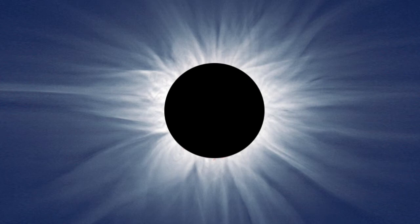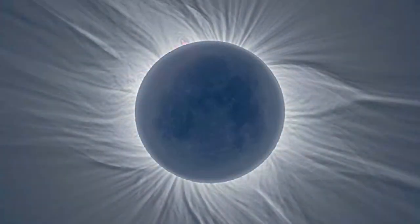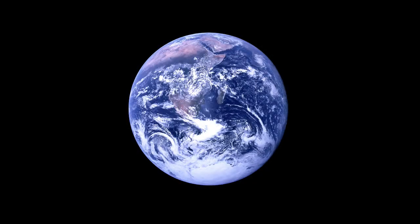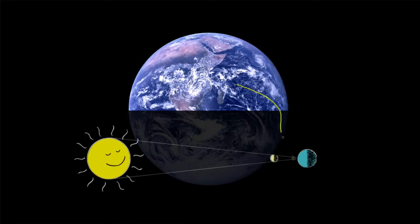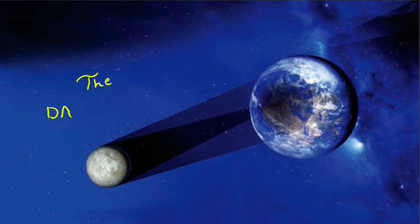For my first total solar eclipse, I saw the face of the moon where the sun should be. But it was a new moon — how could I see the face of the new moon? Well, if it's a new moon, then on the moon it's necessarily a full earth. The brightness of the full earth lights up the lunar surface. It's earthshine, enough to make the dark side of the moon visible.